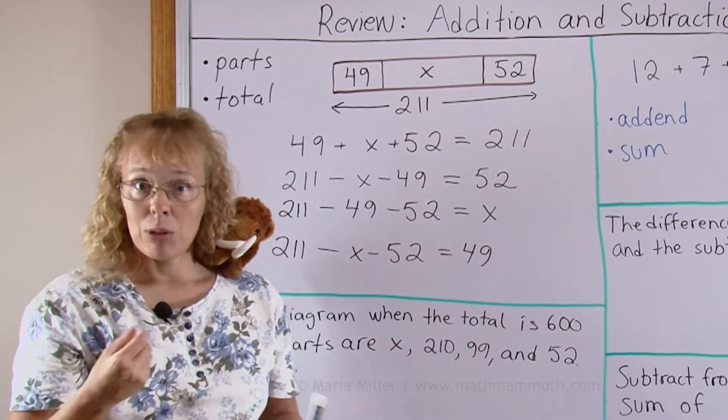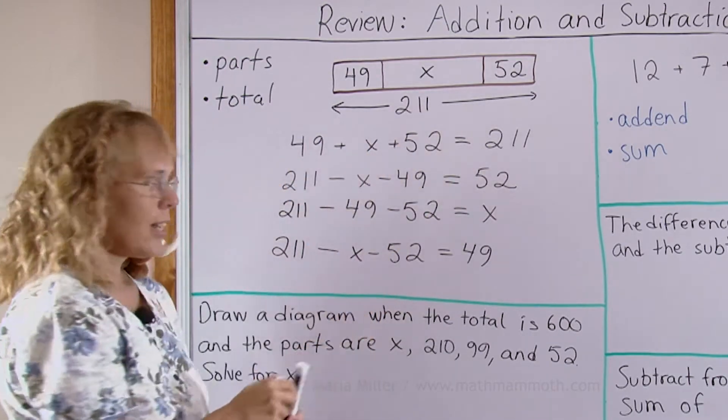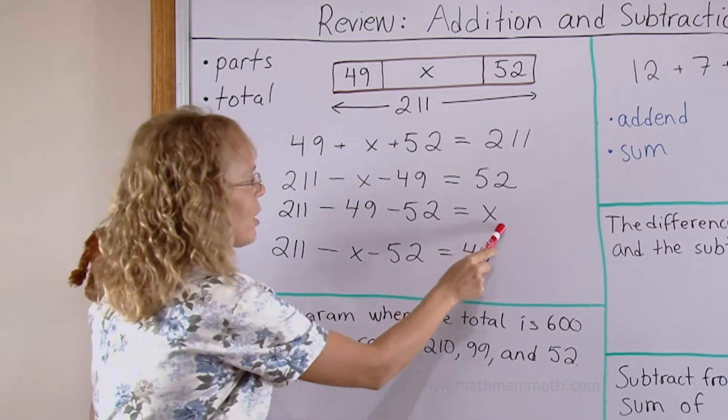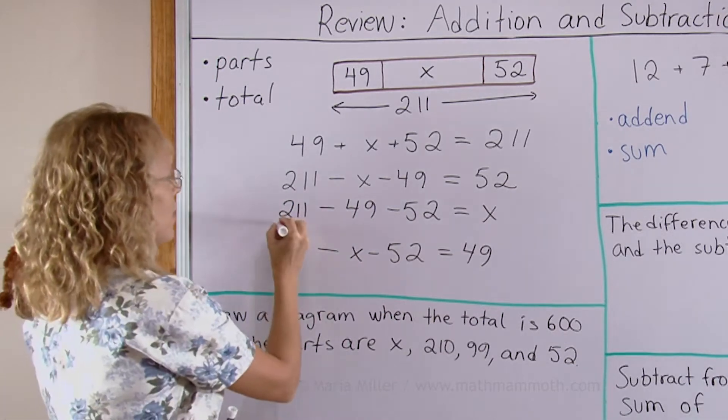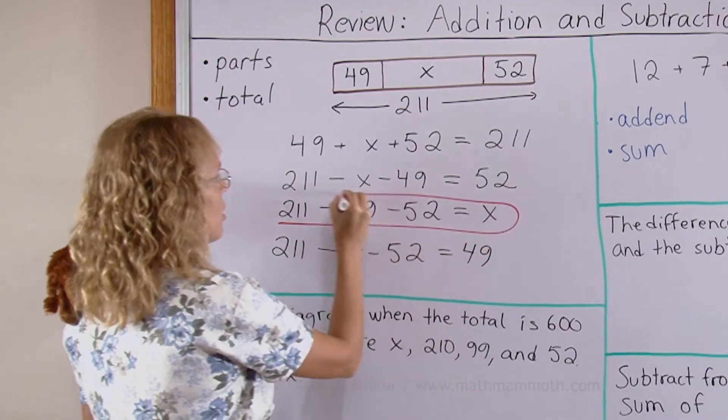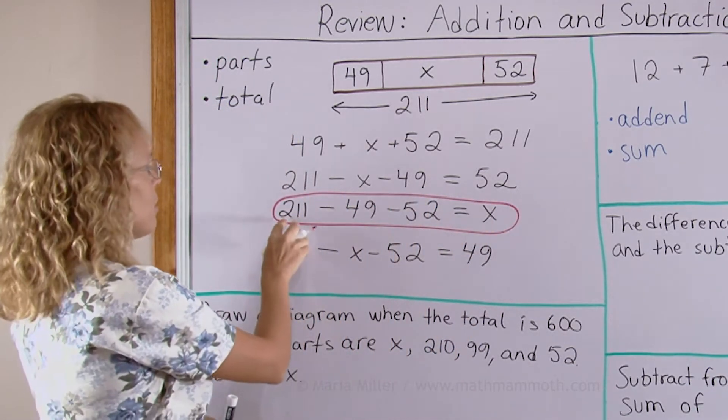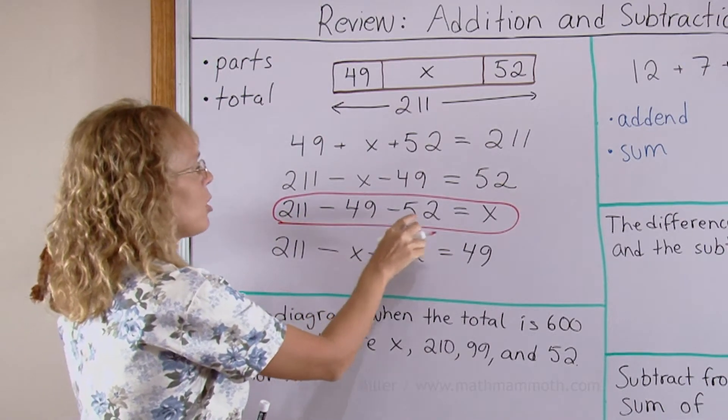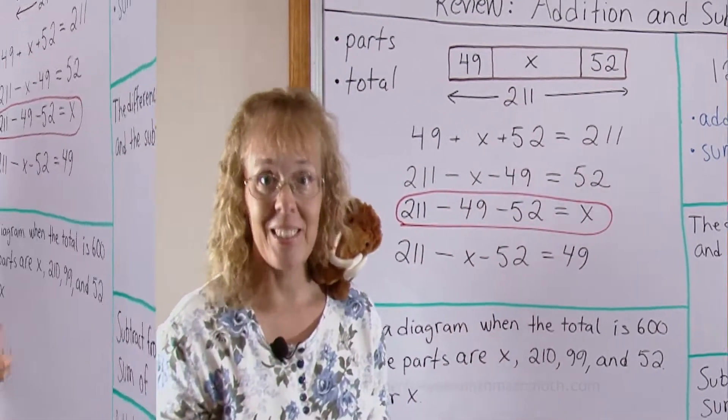And if I was solving this as my equation then this particular one here is what I would use to solve x. I would subtract 211 minus 49 minus 52 and then I would get my x.